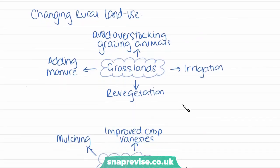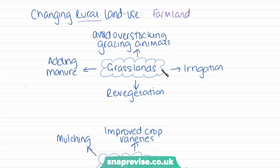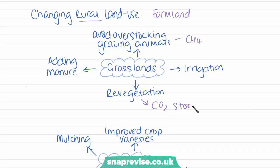Other techniques of climate change mitigation involve changing rural land use — rural meaning areas which are not urban, such as farmland. In areas of grassland, we can avoid the overstocking of grazing animals such as cows, as cows release a lot of methane into the atmosphere. We can add manure to increase the productivity of plants, revegetate areas by adding more plants to get more photosynthesis and store more CO2, and increase irrigation so more plants can grow and therefore more CO2 can be stored in plants.